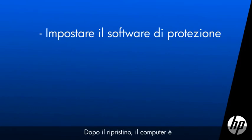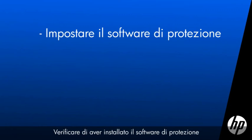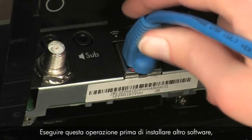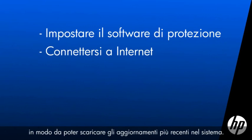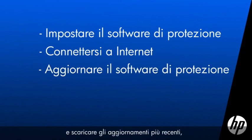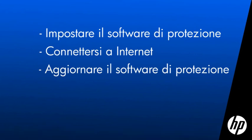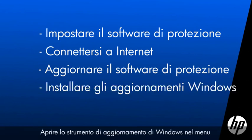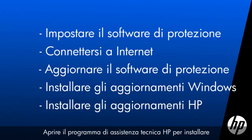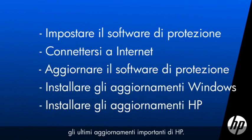After recovery, your computer is more vulnerable to security threats. Make sure you have security software installed before connecting to the Internet. Once your computer is secure, connect to the Internet. Do this before installing other software in order to get the latest updates to your system. After connecting, open your security software and get the latest updates, especially updates to virus definitions. Open the Windows Update tool in the Start menu to get the latest updates for Windows. Open HP Support Assistant to install the latest important updates from HP.